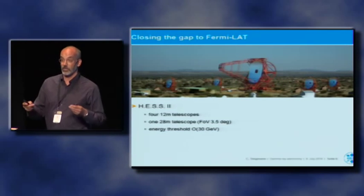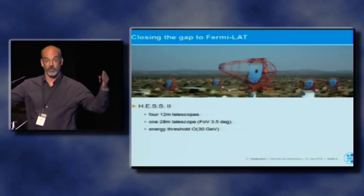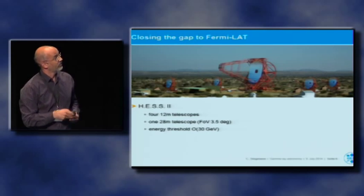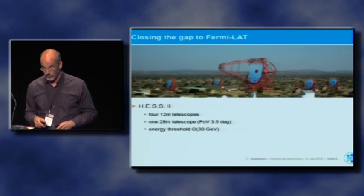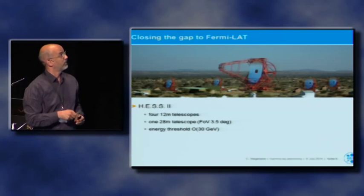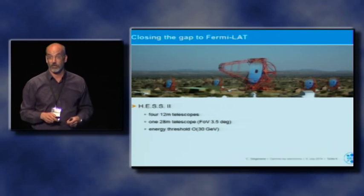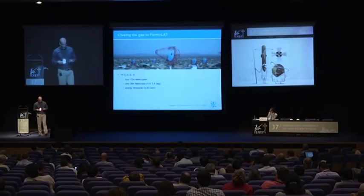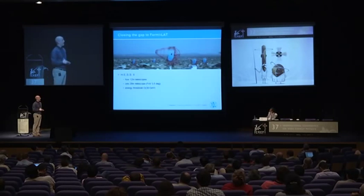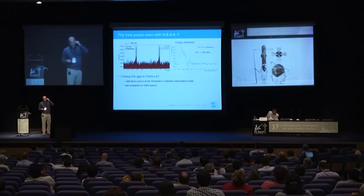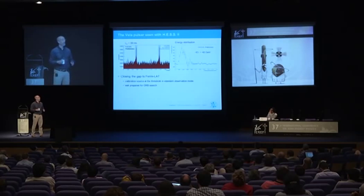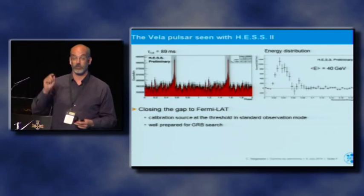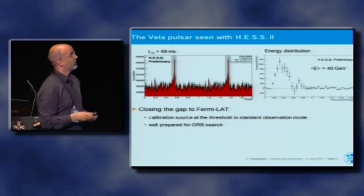I would like to show where we are from the instrumental point of view, and I've selected a few highlights — forgive me for a slight bias toward these systems since I work with them. To close the gap to Fermi-LAT in energy coverage, the HESS system running in Namibia has four 12-meter telescopes running for more than 10 years, and has recently brought into operation this large telescope — the biggest in the world with a 28-meter mirror diameter. We thought the energy threshold of 30 GeV was optimistic, but here is the proof it works: this is the phasogram of the Vela pulsar, which has a spinning period of 89 milliseconds.